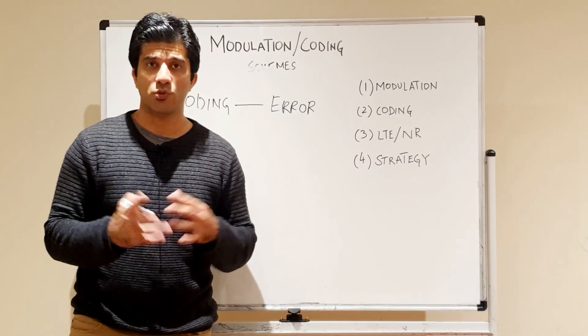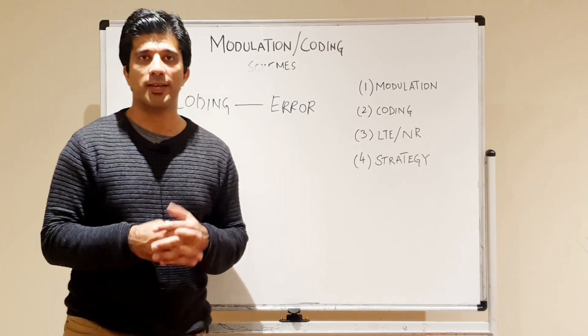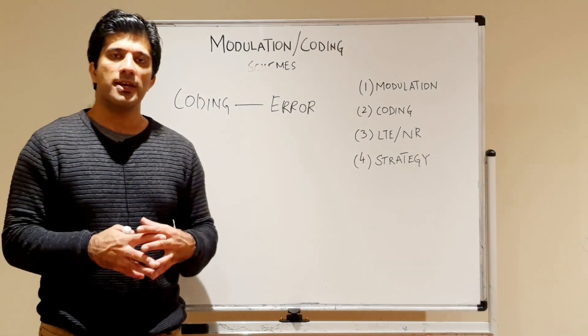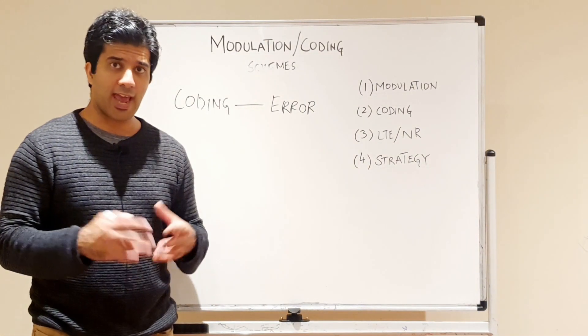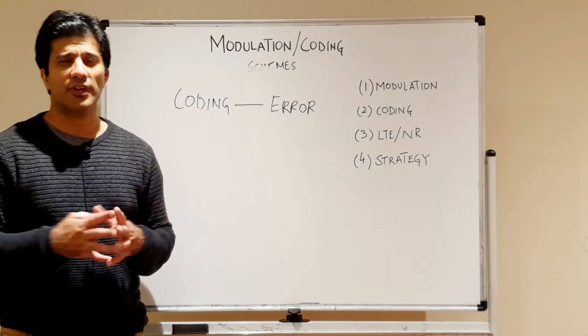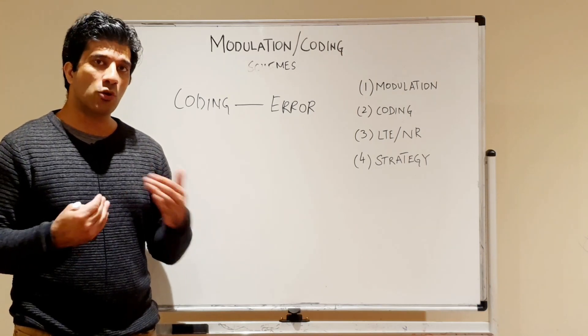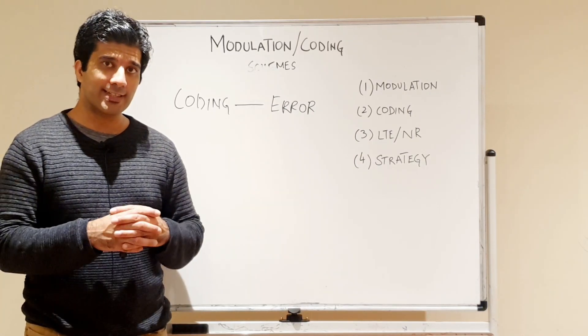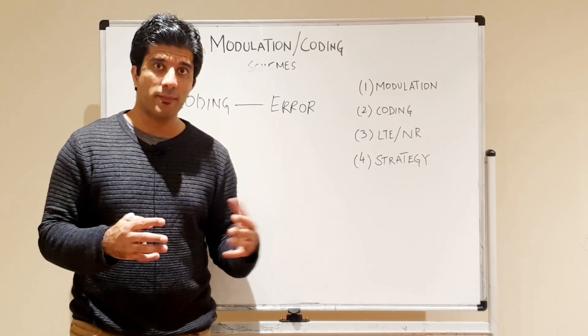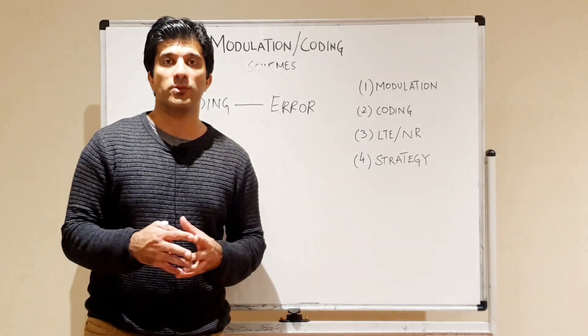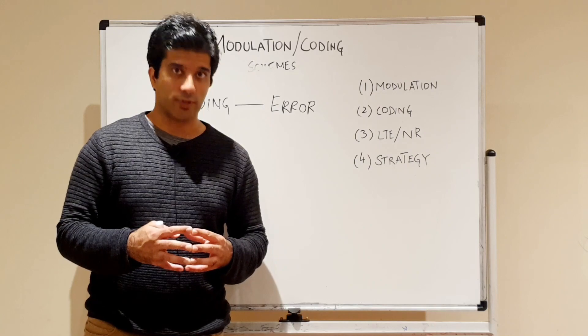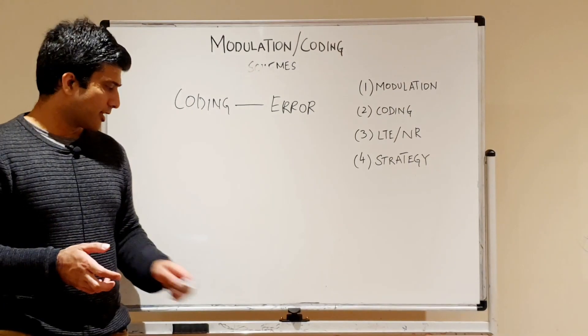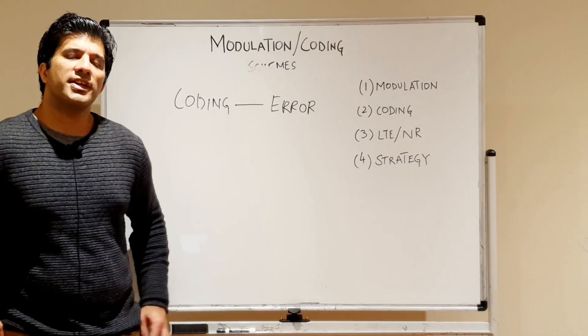That is our third point. In LTE we have around 15 MCS coding schemes which your eNodeB will actually decide for your UE as per the scheduling algorithm. In NR we have around 31 or 33 coding schemes depending on the code rate and the modulation scheme. One thing different about NR from LTE is that LTE has a max of 64 QAM and NR has 256 QAM as well in downlink and in uplink.